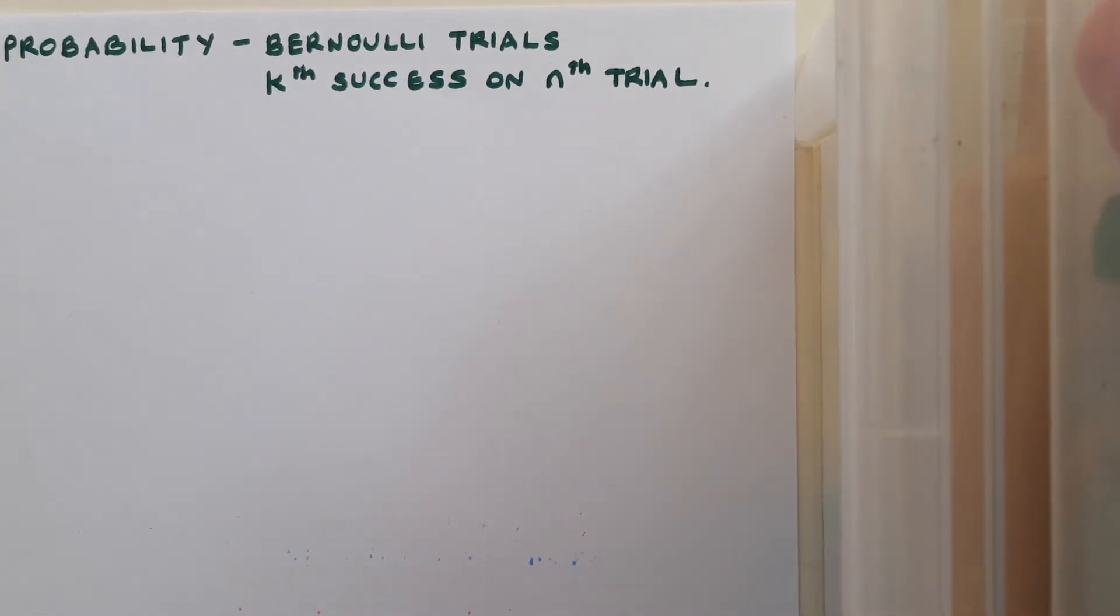This is a video on probability. It's Bernoulli trials and specifically it's about finding the probability of the kth success occurring on the nth trial.